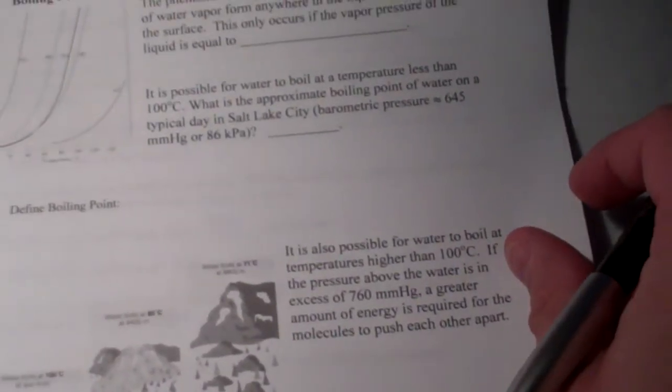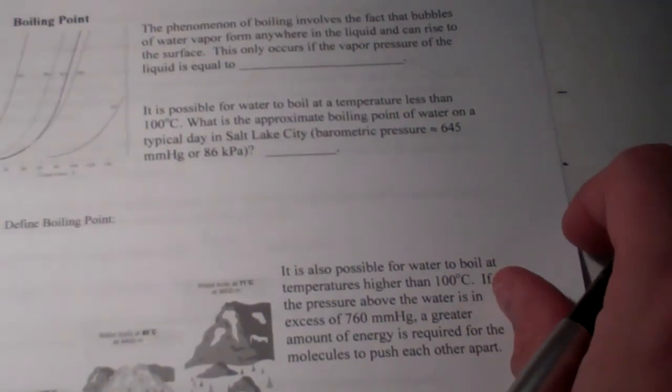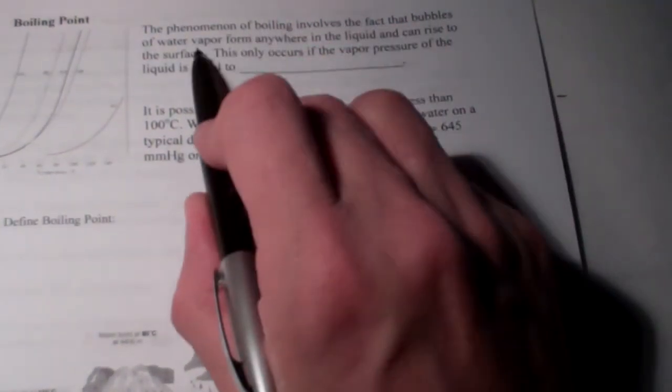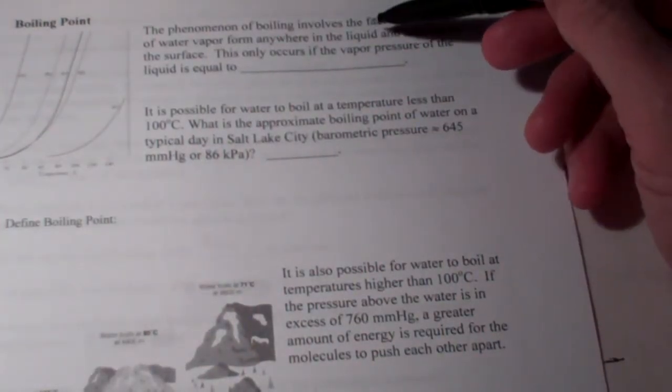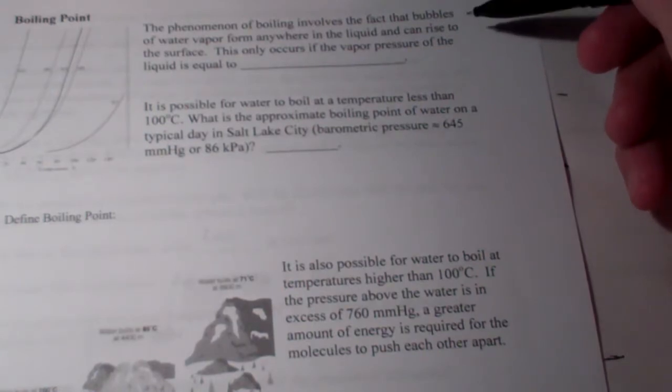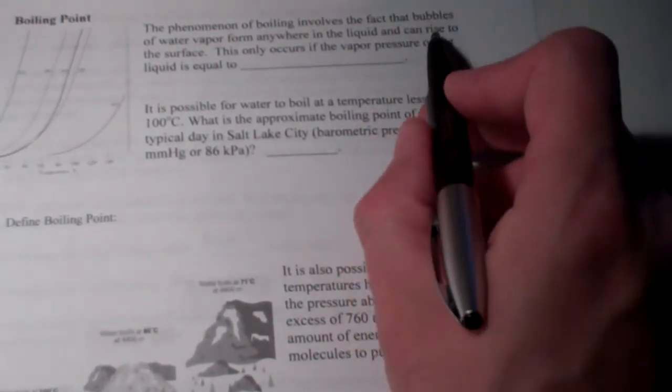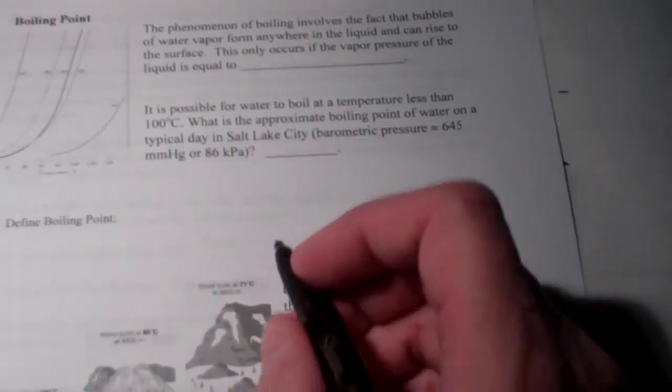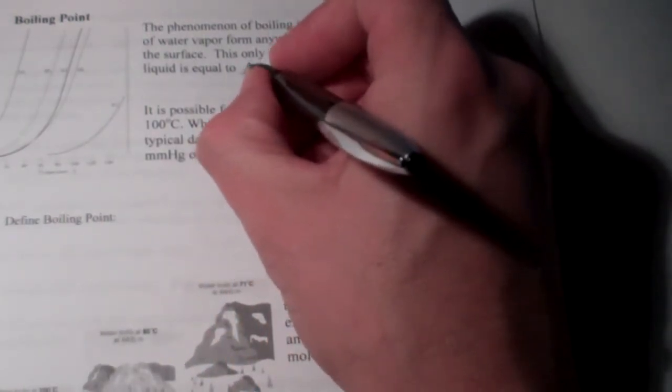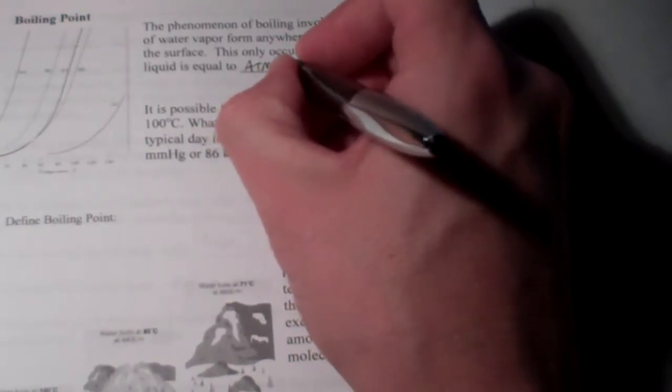Alright, boiling point. We're still talking about gases and liquids, obviously. The phenomenon of boiling involves the fact that bubbles of water vapor form anywhere in the liquid. And of course, since gases have a density smaller than liquids, they rise to the surface. This only occurs if the vapor pressure of the liquid is equal to atmospheric pressure.